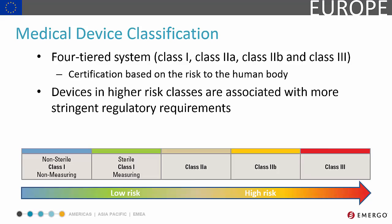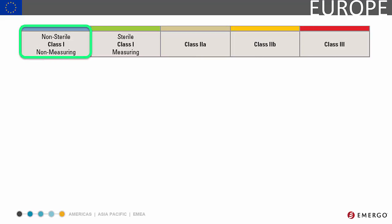The higher the classification, the more stringent the regulatory requirements. Unlike other regions, Europe does not use existing devices as a basis for classification. Class 1 devices represent the lowest level of risk as they're not complicated to operate, nor do they pose great risk to patients. All non-invasive devices are Class 1, unless otherwise stated in the Medical Device Directive.